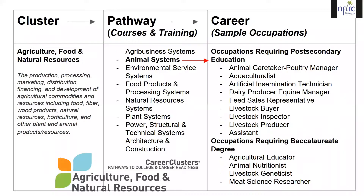Here we have the agriculture, food and natural resources cluster — described as the production, processing, marketing, distribution, financing, and development of agricultural commodities and resources including food, fiber, wood products, natural resources, horticulture, and other plant and animal product resources. When we look at the various pathways in that cluster, you see quite a variety: agribusiness, animal systems, food products and processing, and many more. Following animal systems across to the third column, we see occupations specifically related to animal systems. Again, the cluster leads to pathway, which leads to careers.